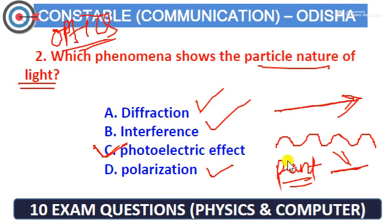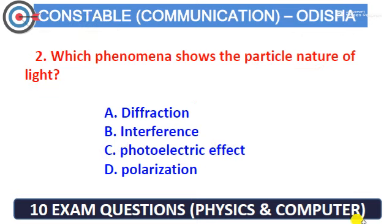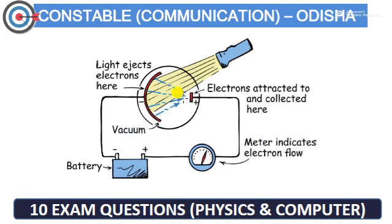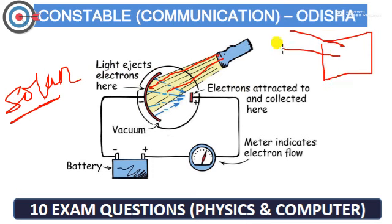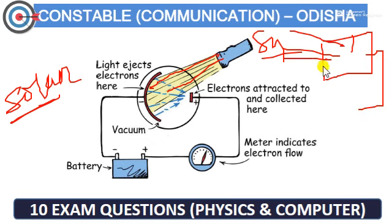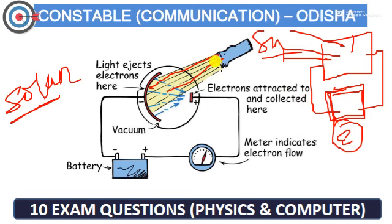It is the particle nature. Diffraction, interference, polarization are terms, but if you have a particular nature, you will need to consider the photoelectric effect. If you have a photoelectric effect, you will have a solar cell. This is the photoelectric effect. If you have a solar panel, the light incident on it demonstrates the photoelectric effect.